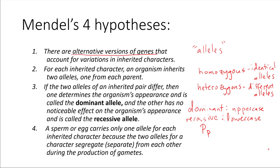Hypothesis number four: a sperm or egg carries only one allele for each inherited character, because the two alleles get separated during meiosis. We've learned about meiosis already, so we know that gametes such as sperm and eggs only get one copy of each allele. This hypothesis about the separation of alleles is called the law of segregation. When a sperm and egg unite at fertilization, each contributes its alleles, which restores the paired condition in the offspring — the offspring will be diploid.